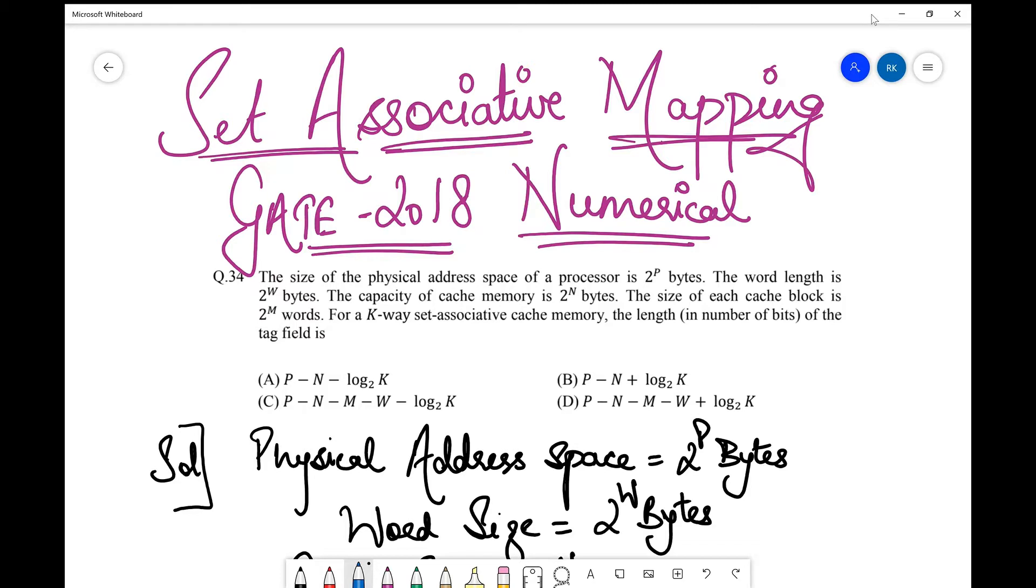The word length is 2^w bytes. The capacity of cache memory is 2^n bytes. The size of each cache block is 2^m words. For a k-way set associative cache memory, the length in number of bits of the tag field is what we need to find.